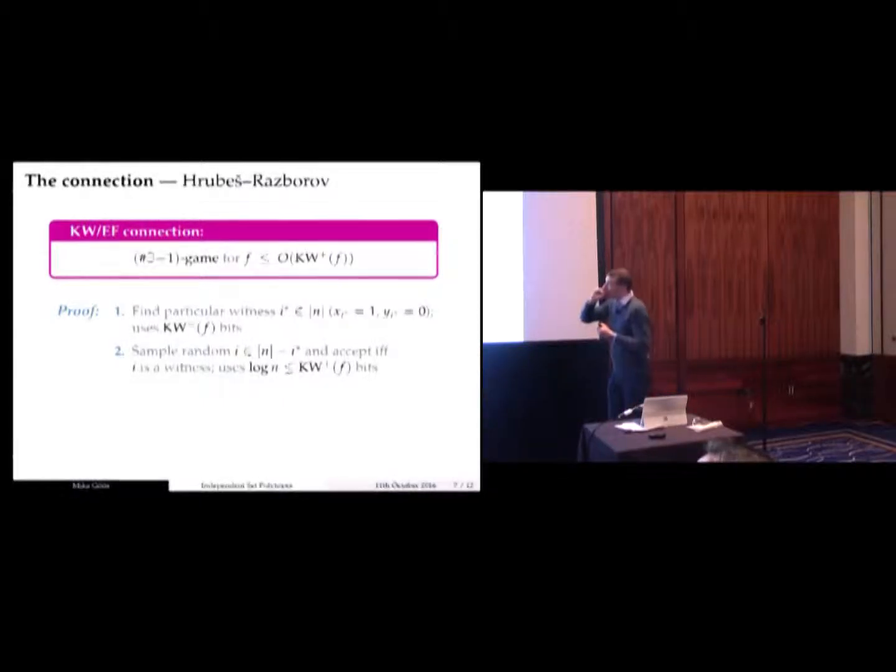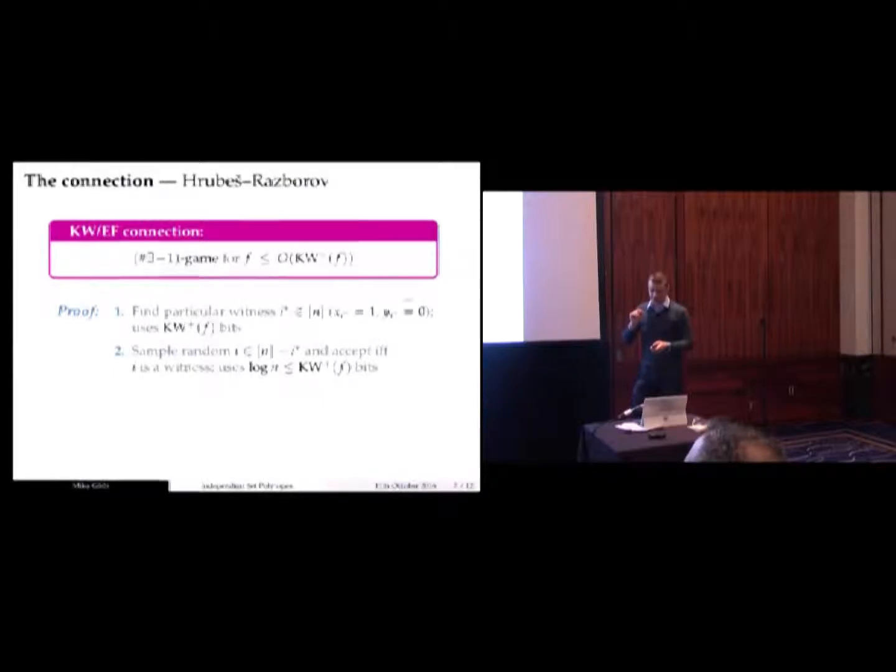It's a really simple connection, and the proof is also really simple. It's a two-line proof. I claim that if you can solve the search problem, you can solve this number of witnesses minus one game efficiently. Assume we have an efficient protocol for the search problem. What do you do? You basically run this search protocol once. You find a particular witness. That's the first step. You complete this protocol, make it into a randomized one that accepts with probability proportional to the number of witnesses minus one. The minus one corresponds to the witness you actually found. The second step is to sample a uniformly random witness or input coordinate distinct from the one you found. Check whether that's a valid witness to the Karchmer-Wigderson game, accept if it is. That's the protocol whose acceptance probability is proportional to the number of witnesses minus one.